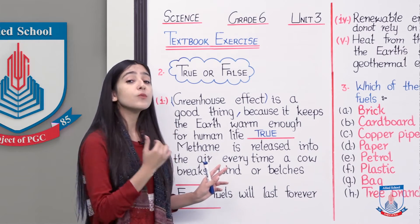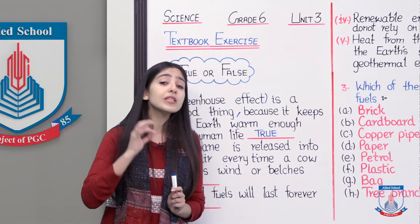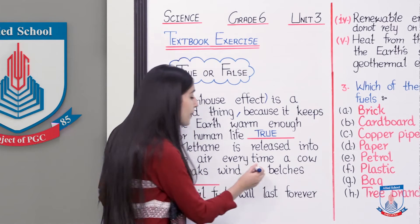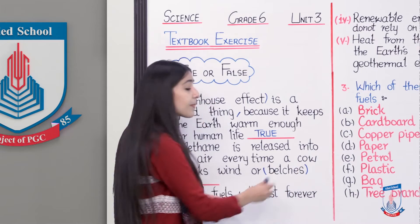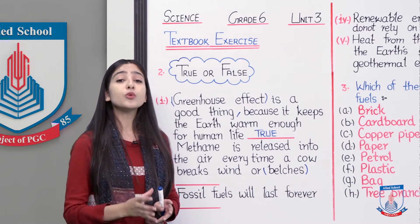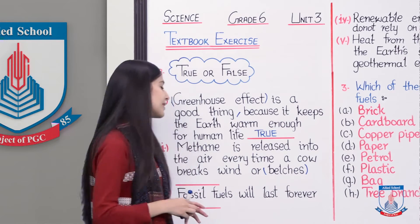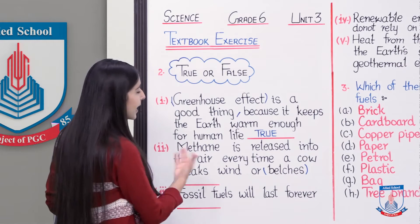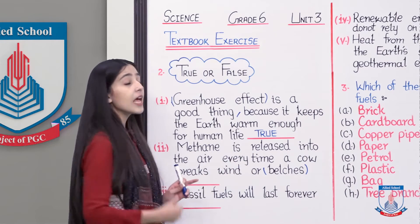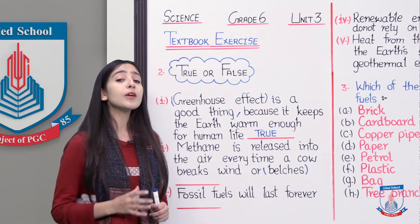When methane gas is produced, it has to exit the animal's body. This happens through belching — a process by which cattle release air out of their body. Through this process, methane exits the body of any cattle. The statement says methane is released into the air every time a cow breaks wind or belches.